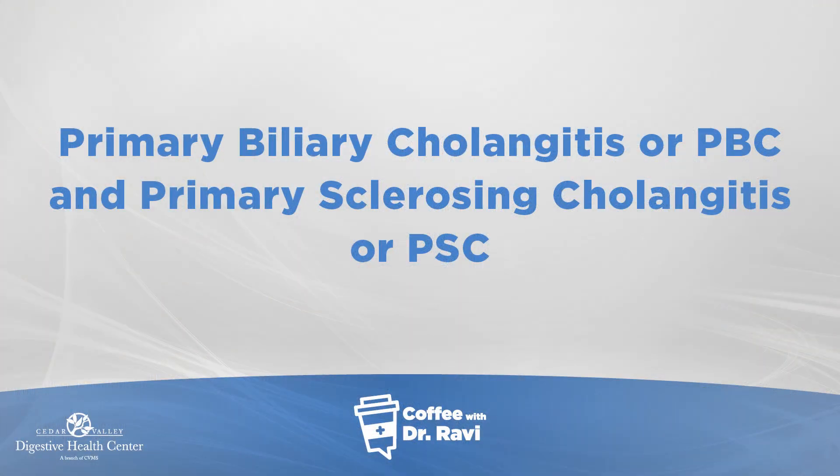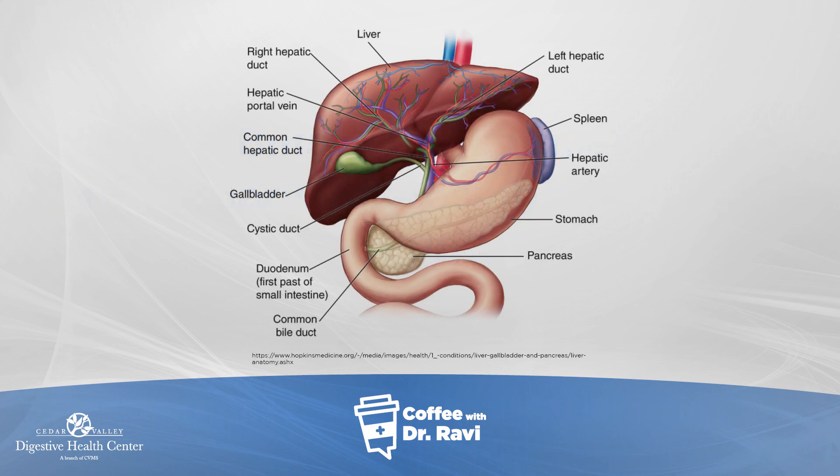Today I wanted to talk about two liver diseases. Rather than focus on the diseases themselves, I wanted to talk about the broad general principles about how we think about them. The diseases are called primary biliary cholangitis and primary sclerosing cholangitis. The liver, as you can see on this slide, sits in the right upper quadrant. It has two drainage ducts that join with a duct from the gallbladder called the common bile duct, which drains into the first portion of the bowel called the duodenum.